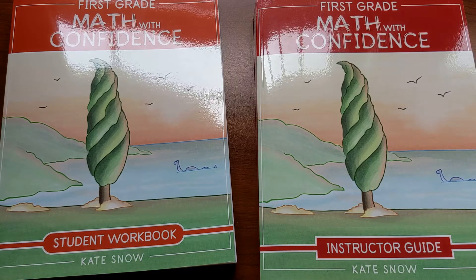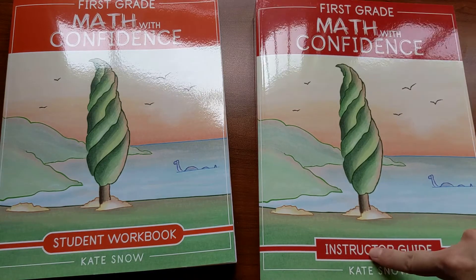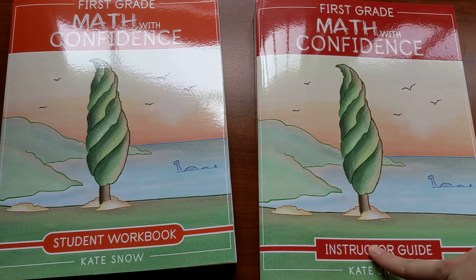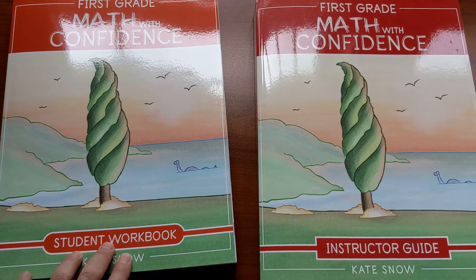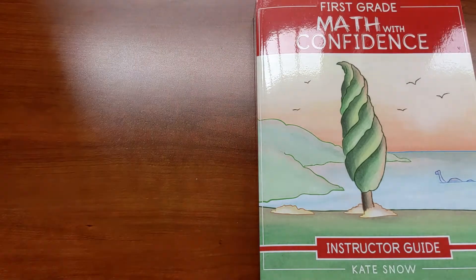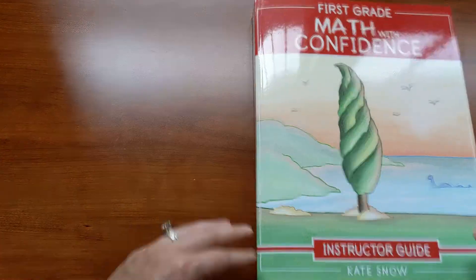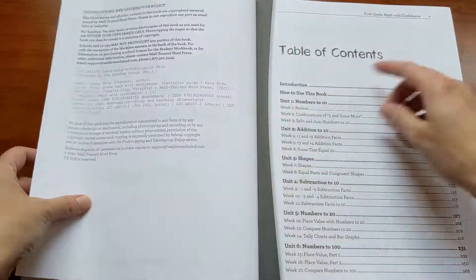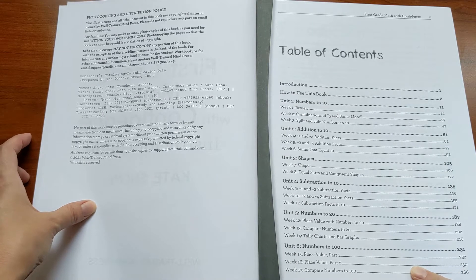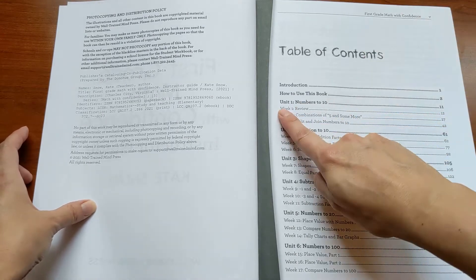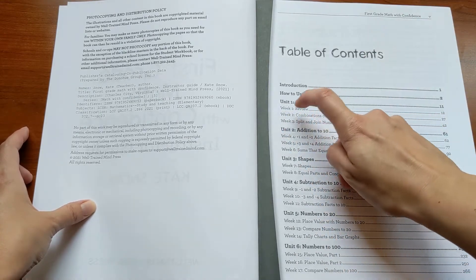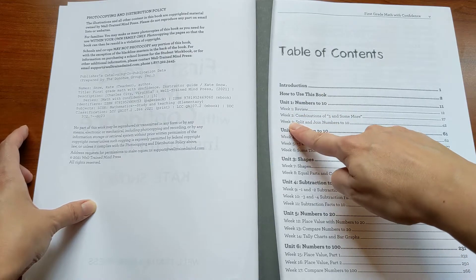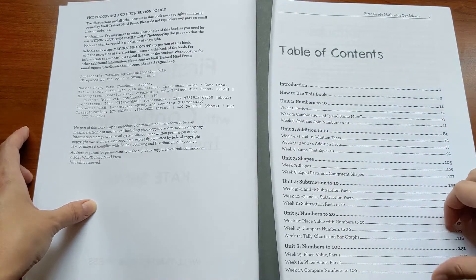So first grade Math with Confidence has two books. There's the instructor guide for you to use as you teach the daily lessons, and then the student workbook is for your student to complete. We'll take a look at the instructor guide first and then get into the student workbook. So it starts with a table of contents and you can see that the book is split into units. For example, unit 1 is numbers to 10 and then there are three weeks of lessons within that unit.